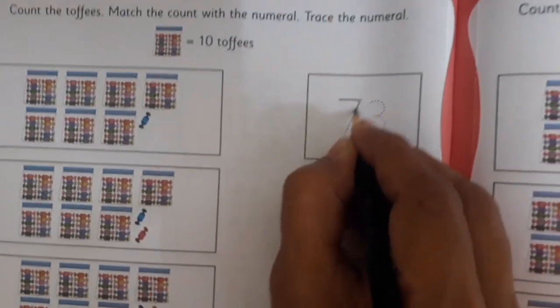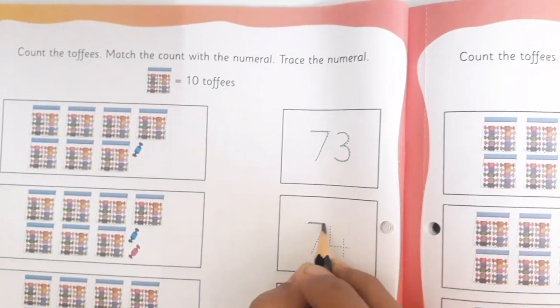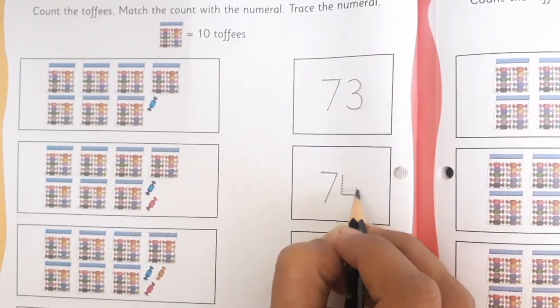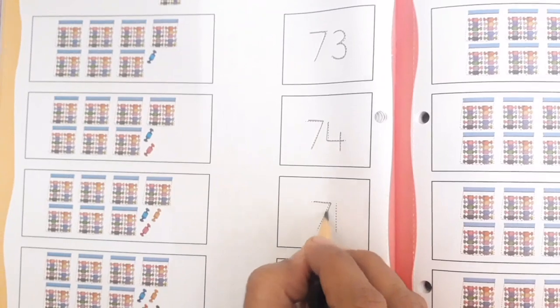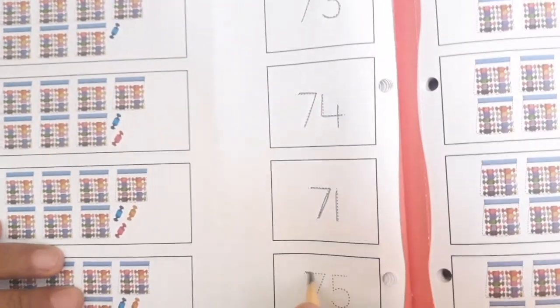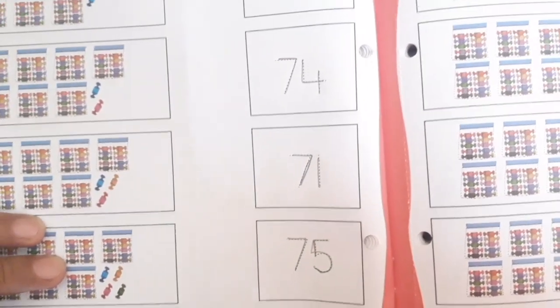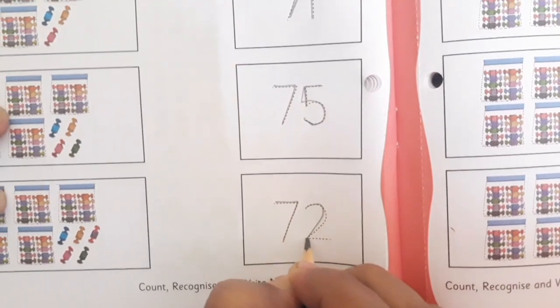Now first of all, we are going to trace the numerals. So I am going to trace all the numerals. You are also going to do the same thing. 73, 74, 71, 75, 72. Now same way you are going to trace numerals over here also.